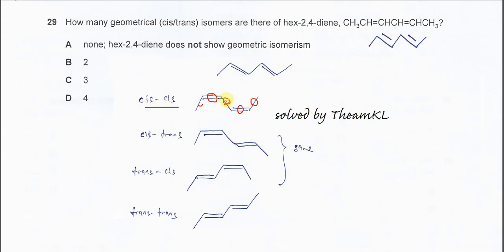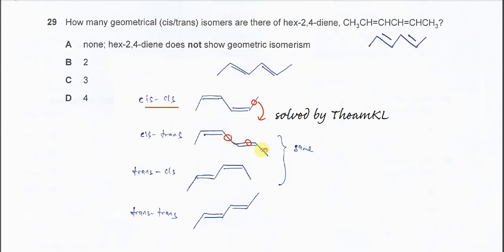This is the cis-cis isomer. It can also be cis-trans. For the cis-trans arrangement, this part will be cis — the two larger groups are on the same side for this double bond. For the other double bond, we bend it down so it becomes trans — the two larger groups are now on different sides. Therefore this isomer is a cis-trans isomer.